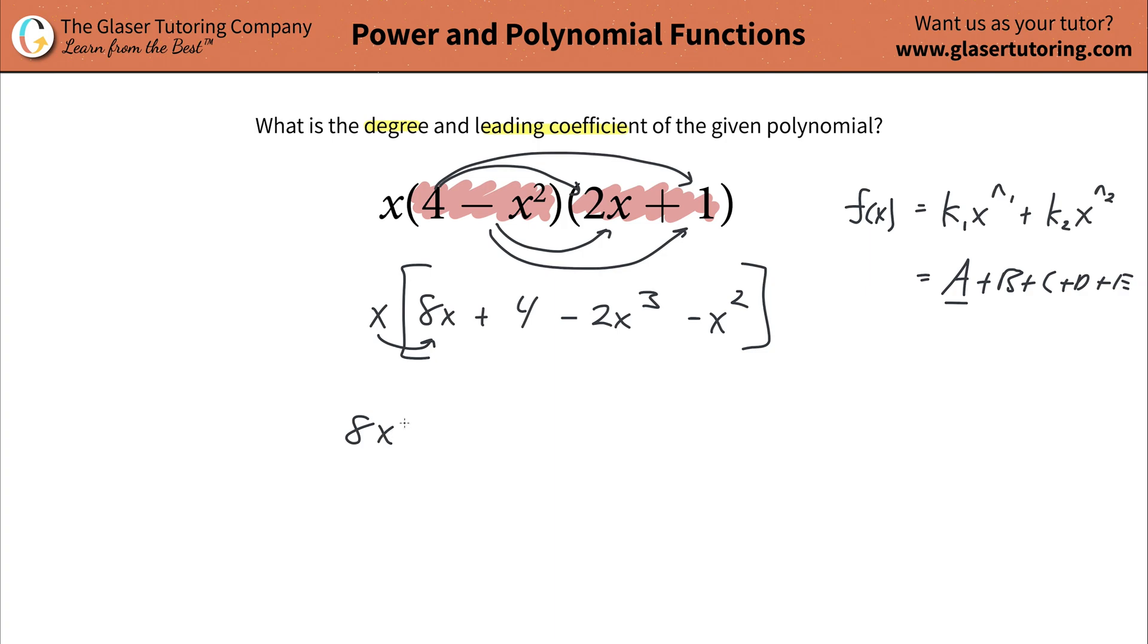So this would be 8x squared. Then take the x and multiply it by positive four. So this is going to be positive four or plus 4x. Then take the x, and this is going to get a little messy with all these arrows, but I think you see the pattern.